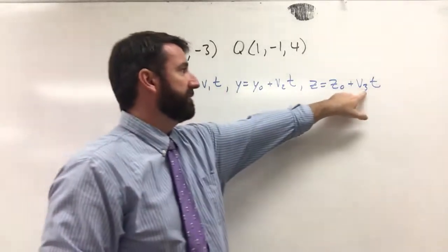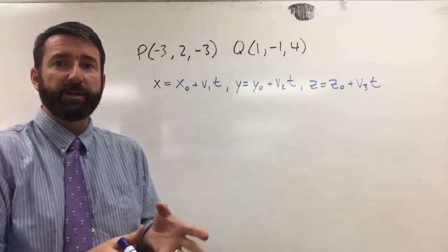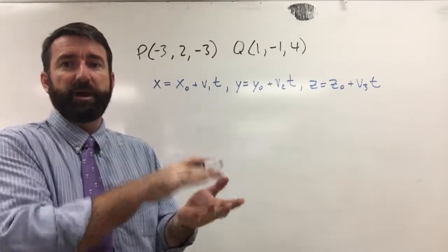And v₁, v₂, v₃ are the components of a vector that's parallel to the line.